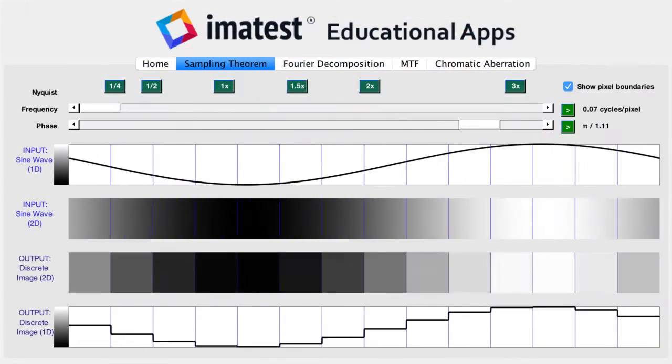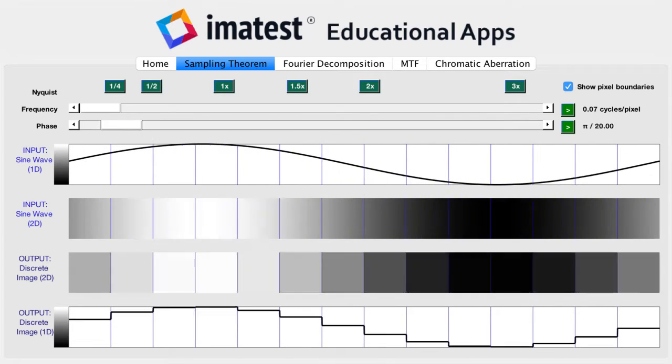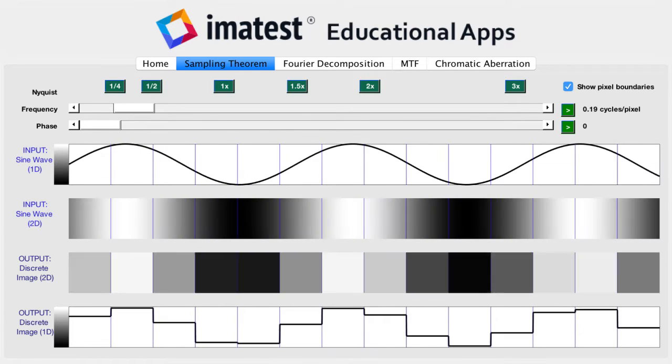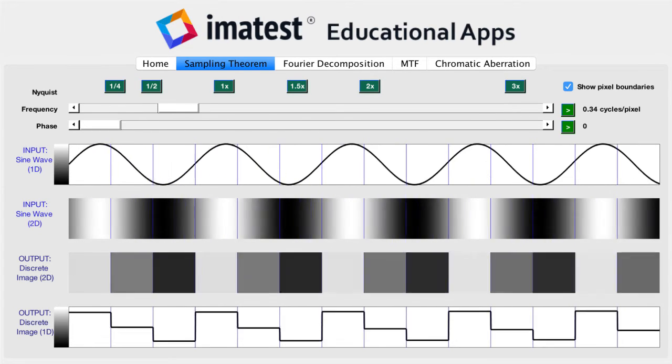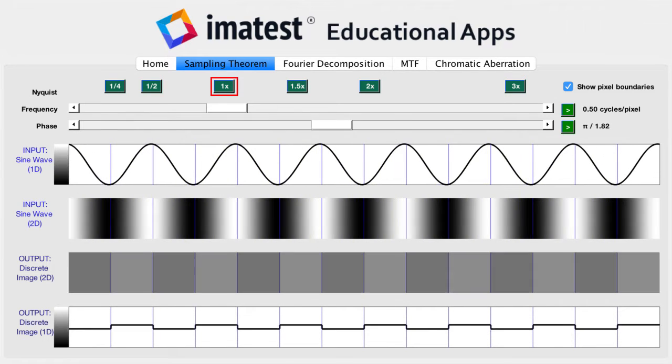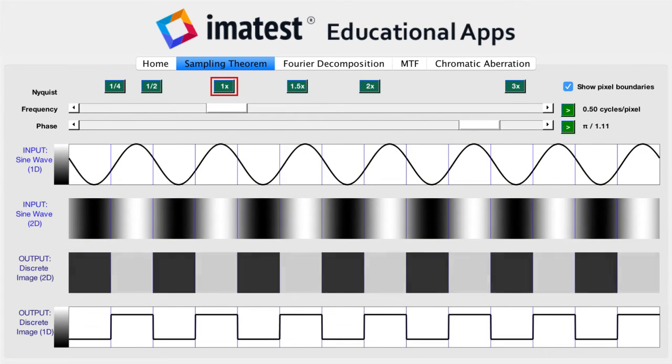Image sensors sample these scenes at every pixel. The spacing between pixels in a sensor determines the rate of sampling. The highest frequency that a sensor can sample is known as the Nyquist frequency.